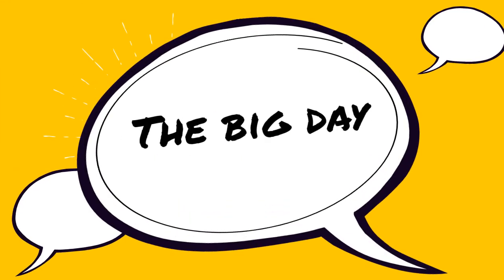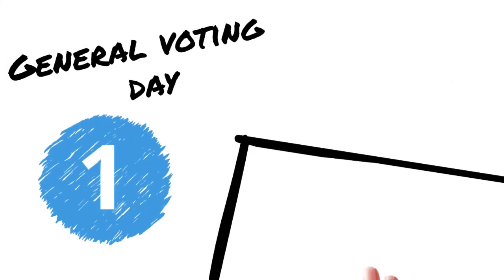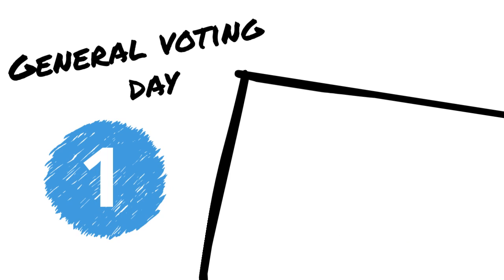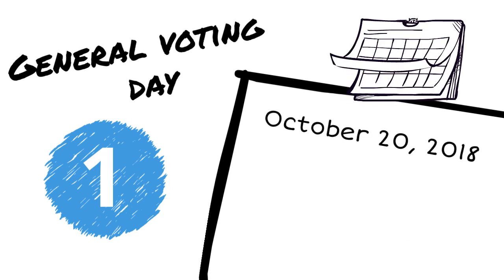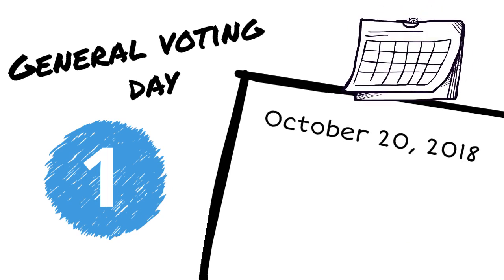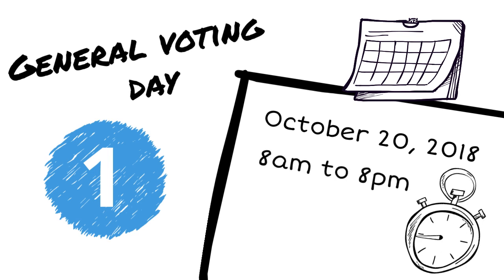The big day — what can you expect on general voting day? General voting day will take place on Saturday, October 20. Voting places will be open from 8am to 8pm local time.